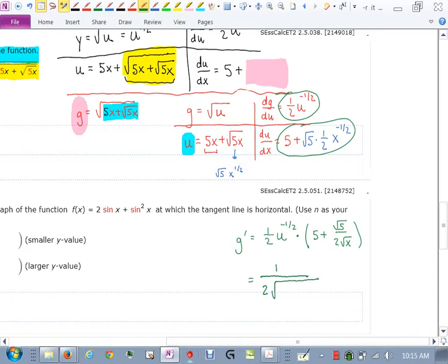1 over 2, u to the negative 1/2 comes down, and then it's a square root. Now what was u? u was actually 5x plus root 5x, and then we have times the rest of it, 5 plus root 5 over 2 root x. Now all of that was just the derivative of g, and so that piece right here, that was the derivative of this, which is what we want to plug in right there.